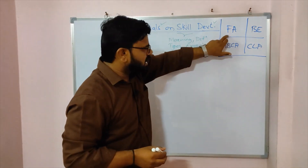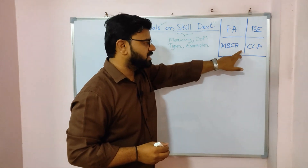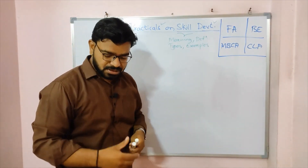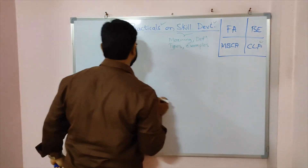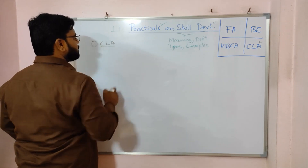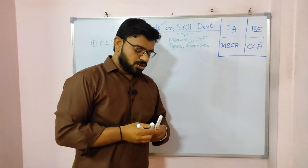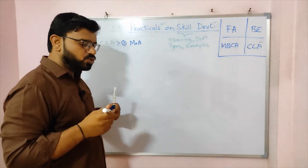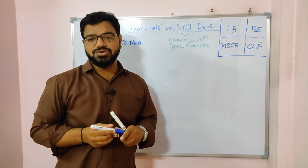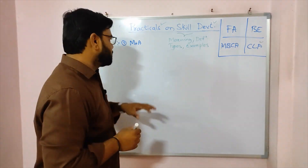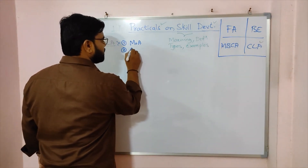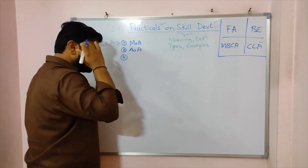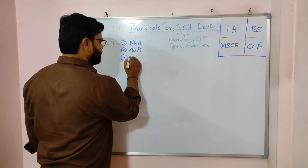Now let us look at the practical questions from each subject. Starting with company law and administration: they may ask you to draft a memorandum of association — this can be asked for five marks or fifteen marks. They may also ask you to draft articles of association. These are the key drafting tasks in the CLA practical syllabus. They may also ask you to draft a notice for company meetings.